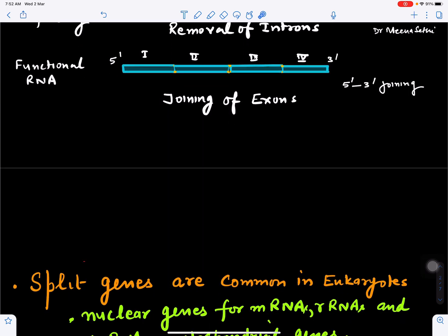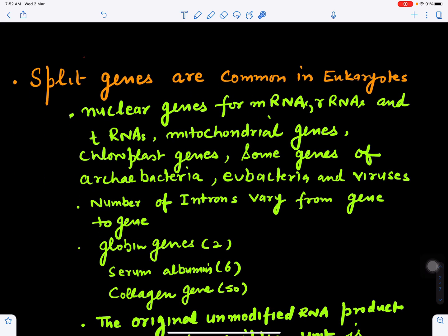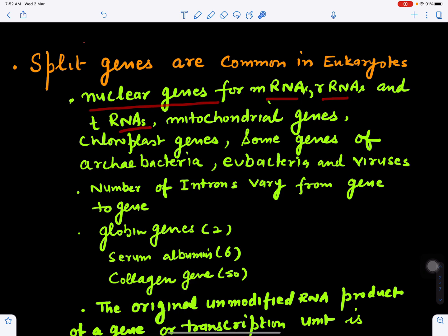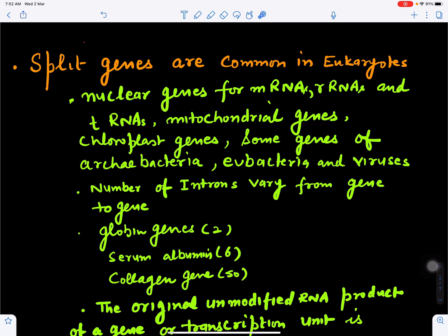The non-coding region has to be removed for the formation of proteins. Split genes are more common in eukaryotic organisms compared to prokaryotic organisms. They are usually found in nuclear genes for messenger RNA, ribosomal RNA, and transfer RNA, as well as mitochondrial genes, chloroplast genes, some archaebacterial genes, and viruses.